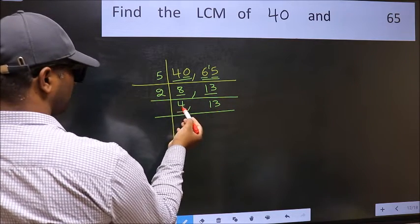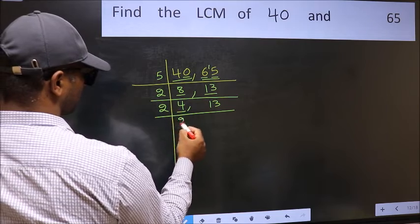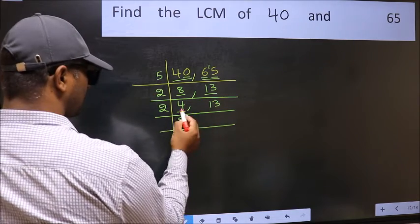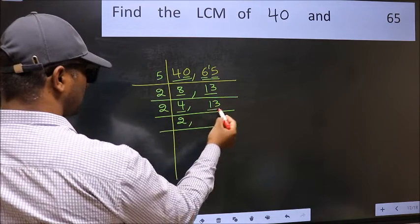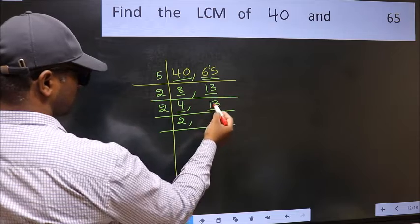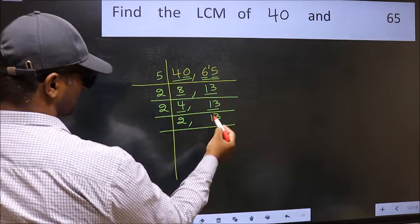Now here we have 4. 4 divided by 2 is 2, and 2 divided by 2 is 4. The other number is 13, which is not divisible by 2, so you write it down as it is.